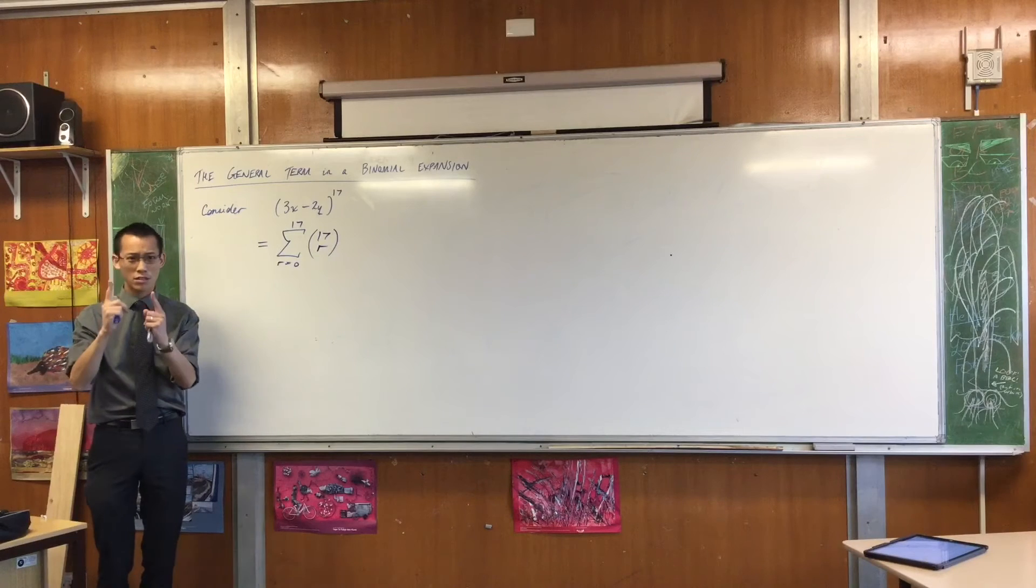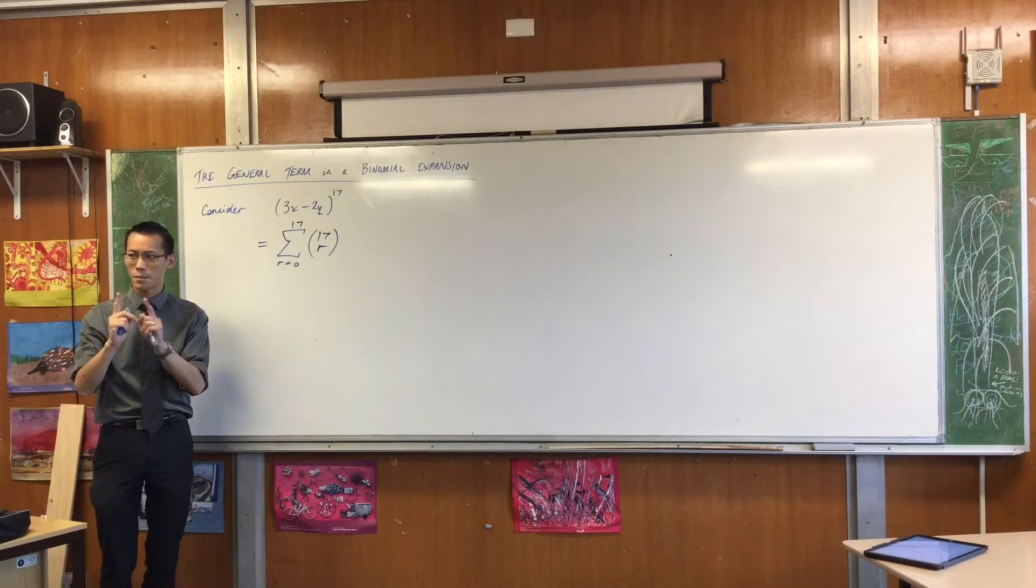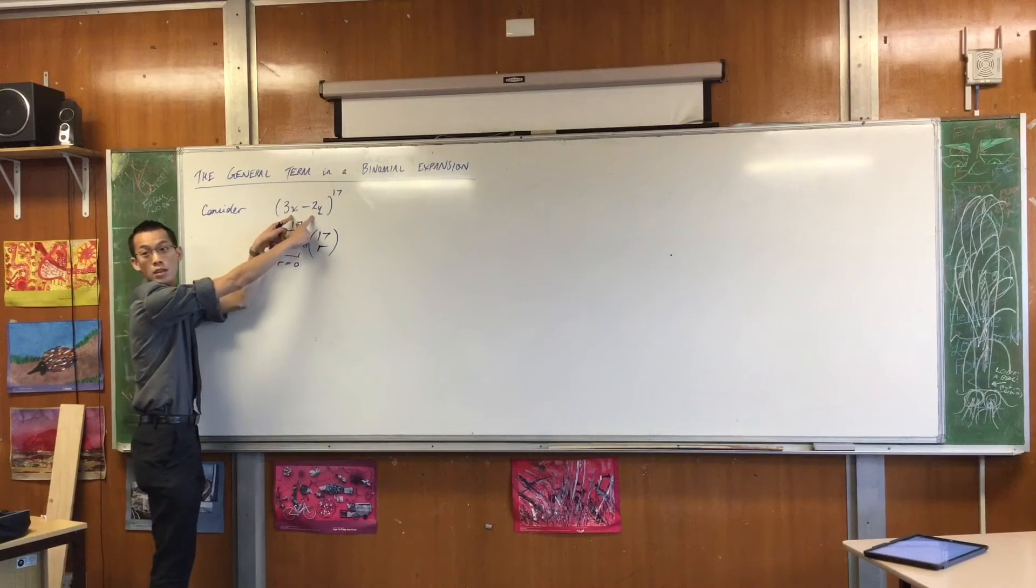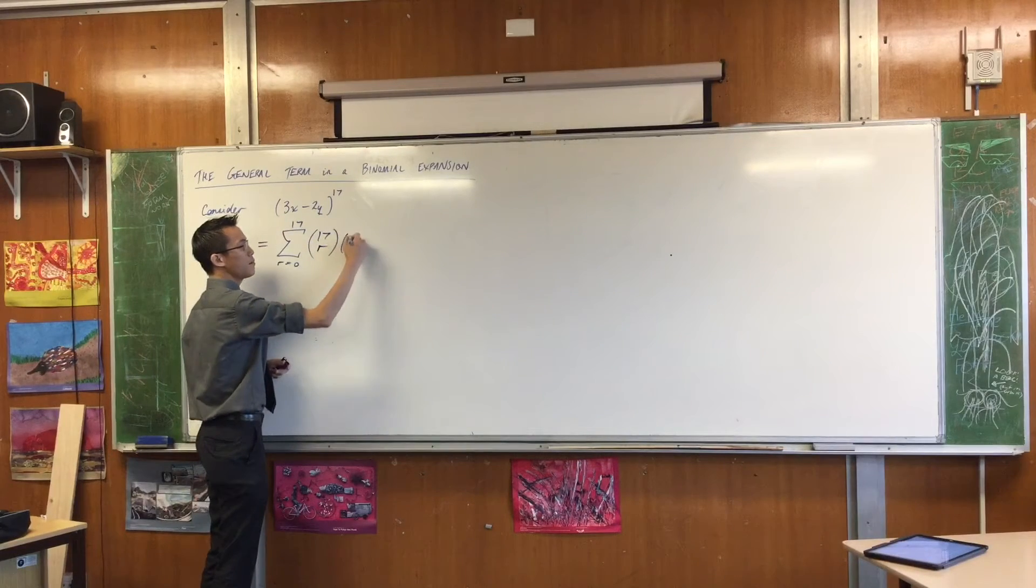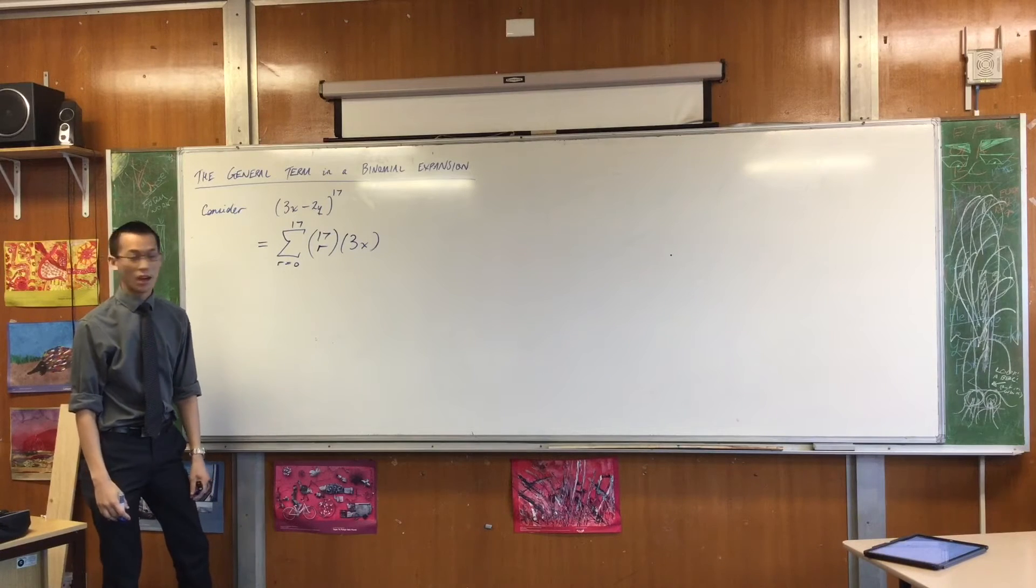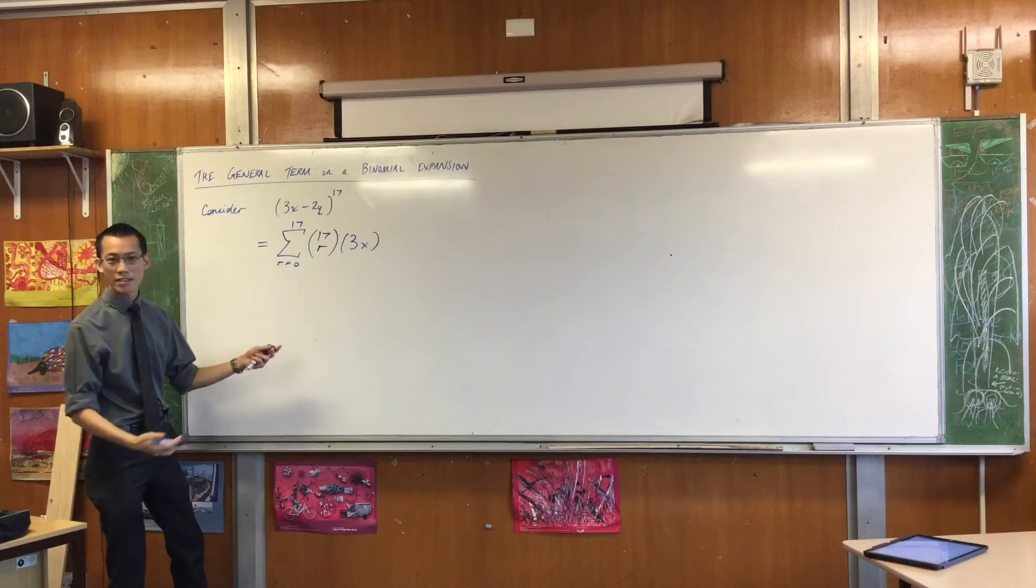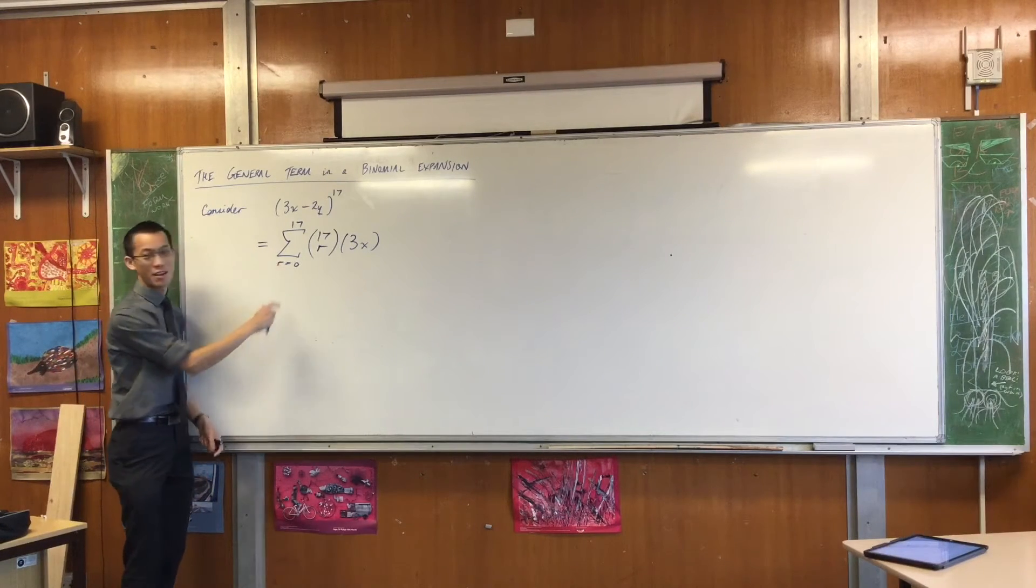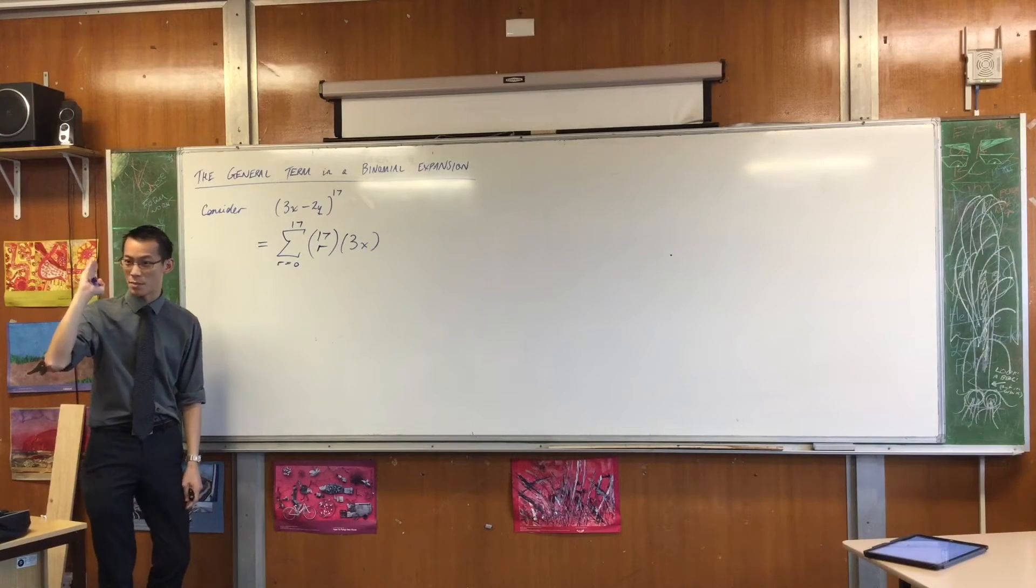There's the first component, what about the other two? Where did the other two come from? Yeah, it comes from these guys, right? So you're going to get some number of these. How many? 17 minus r.